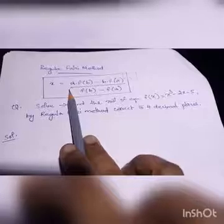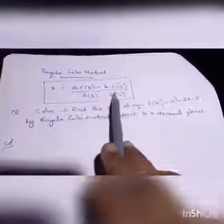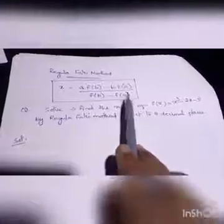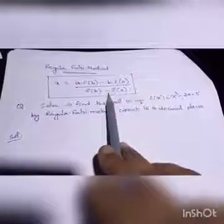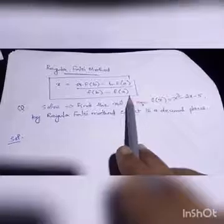The formula used for solution is x is equal to a into f of b minus b into f of a divided by f of b minus f of a. This is the formula: x equals a f(b) minus b f(a) divided by f(b) minus f(a).